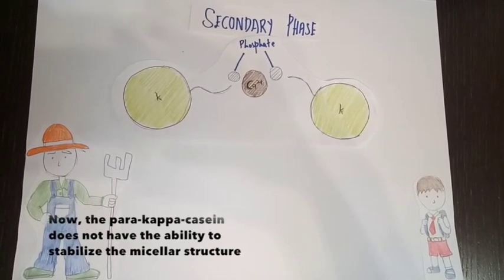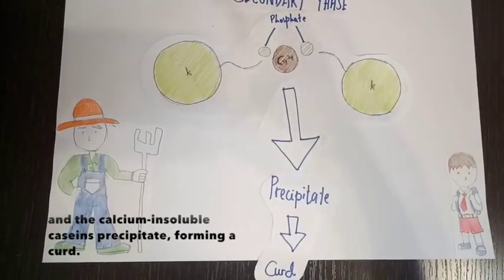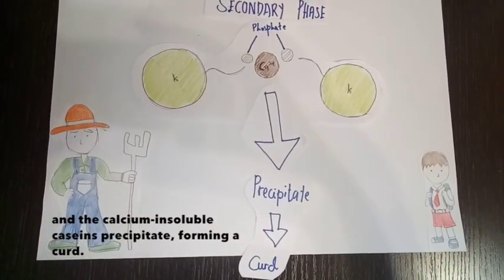Now, the para-kappa casein does not have the ability to stabilize the micellar structure and the calcium insoluble casein precipitate forming a curd.